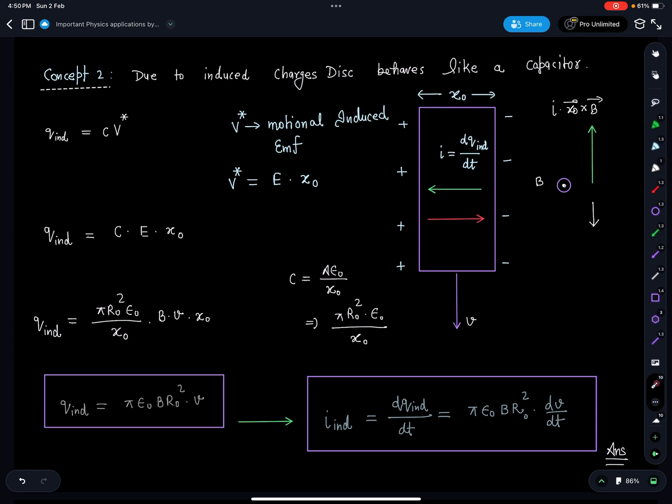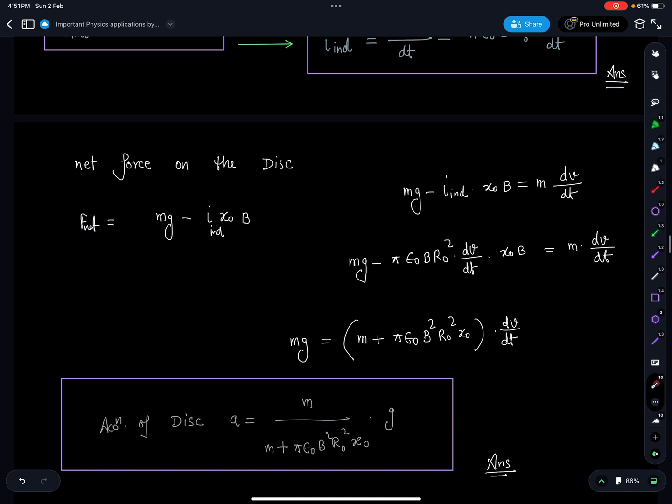When this current i is flowing, it is like a current carrying wire so iL×B force is coming upwards and gravity force is downward. The net force on the disc is less than mg, or acceleration of the falling disc is less than g. We can apply F = ma, so mg minus iL×B equals mass times acceleration. If you substitute the i value here, luckily this dv/dt and dv/dt will combine together and acceleration = dv/dt value we can find. This acceleration is coming as a constant.